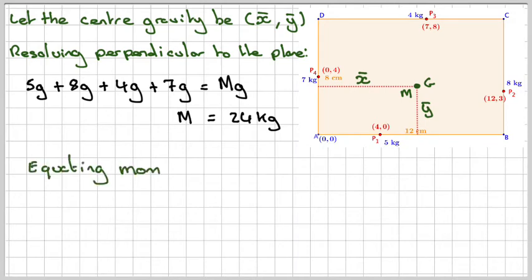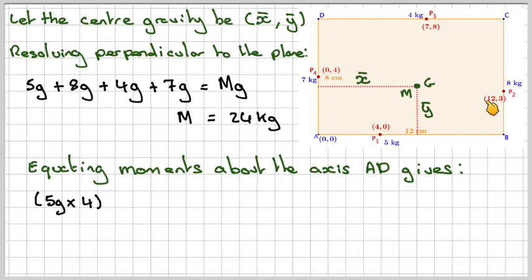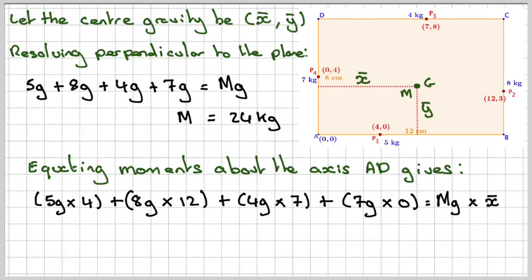Right, if we're now equating moments about this point here, that will give me, this one here will be 5G times 4. This one will be 8G times 12. This one here will be 4G times 7. So we'll just look at the x-coordinates. And this one will have no effect whatsoever. But we'll write it in. It will be 7G times 0. So it will have no effect. And that has to be equal to the total mass times gravity times x-bar here. So all these will have to average out to be the same as this.